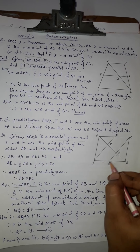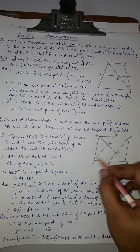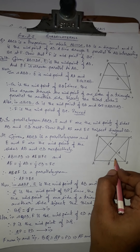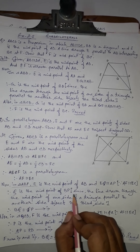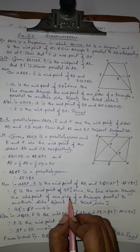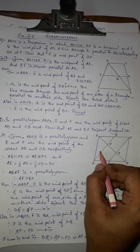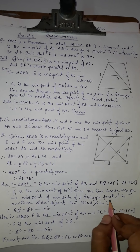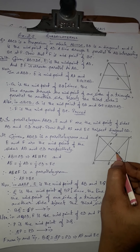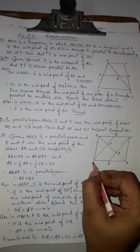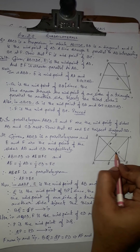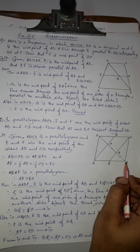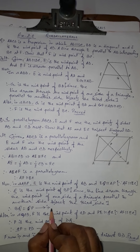In triangle ABP, E is the midpoint of AB and EQ is parallel to AP. By the converse of the midpoint theorem, Q is the midpoint of BP. Therefore BQ equals QP — this is equation (1).